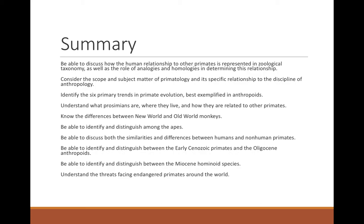In summary, be able to discuss how humans relate to other primates in zoological taxonomy, distinguish between analogies and homologies, consider the scope of primatology and its relation to anthropology, and identify the six primary trends in primate evolution. Know the prosimians, where they live, and how they relate to other primates. Distinguish Old from New World monkeys and among the apes. Be able to identify Proconsul, Gigantopithecus, and Pierolapithecus catalaunicus, and understand the threats facing primates around the world.